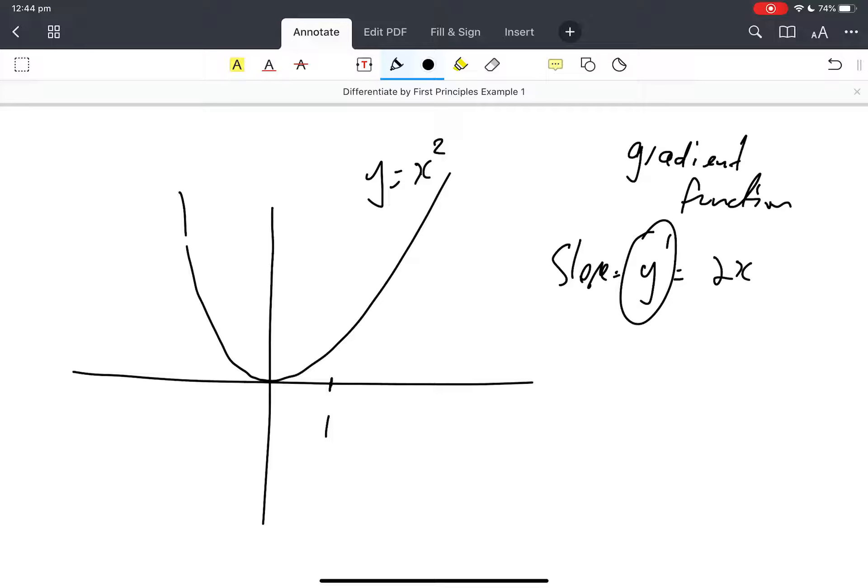Here's x equals 1. So the slope where x equals 1 is 2 times 1, which is 2. So at x equals 1, the slope at that point is 2.